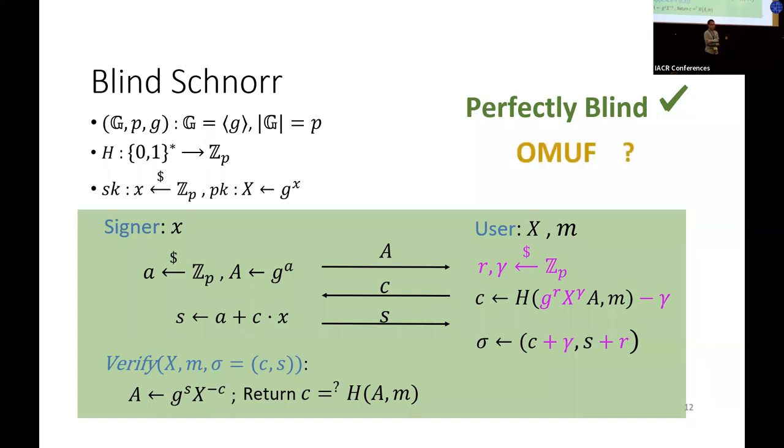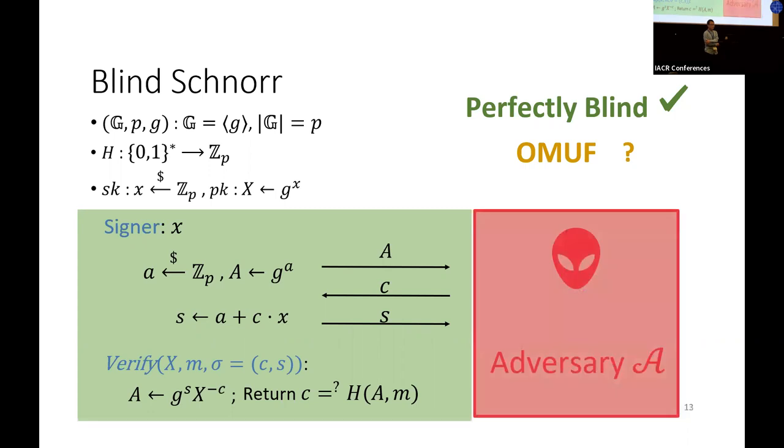It is easy to get a perfect blind version of it by adding two random masks as highlighted. Therefore, we're now looking at the one-more unforgeability of the scheme. Where the user becomes the adversary, so we only need to consider the signer's protocol here.